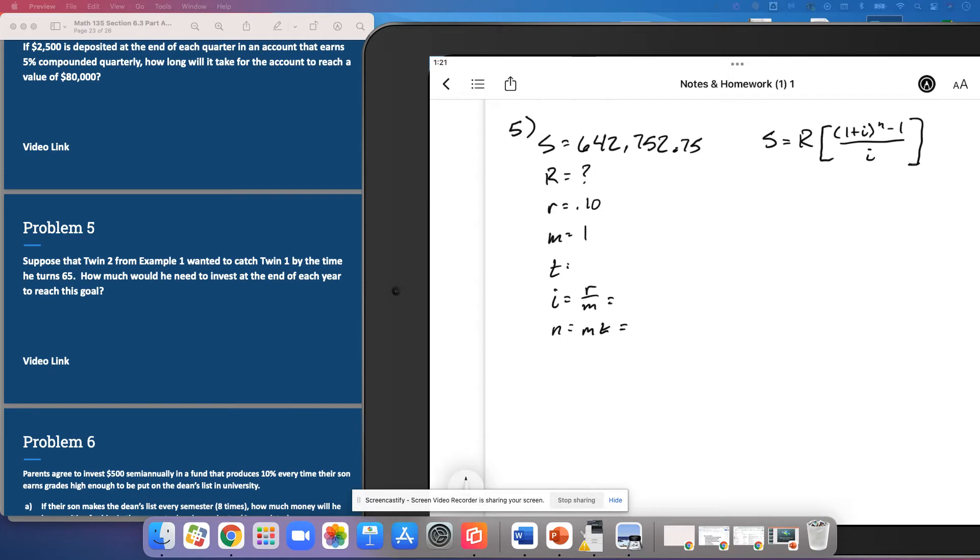And the T was, he started when he was 30 and he was going to go to 65. So the T for this one is 35. So our R over M was 0.10 over 1, putting us at 0.1. MT was 1 times 35, so that's going to be 35.